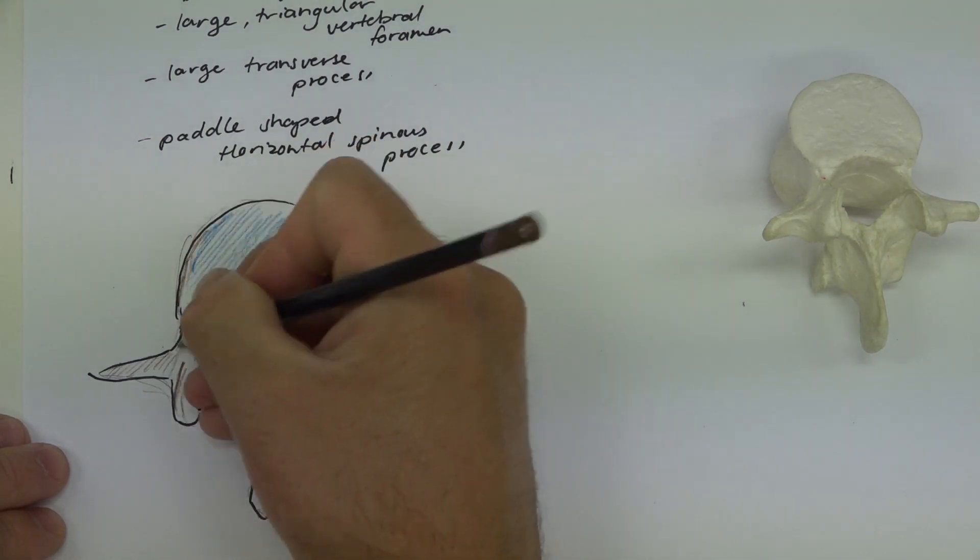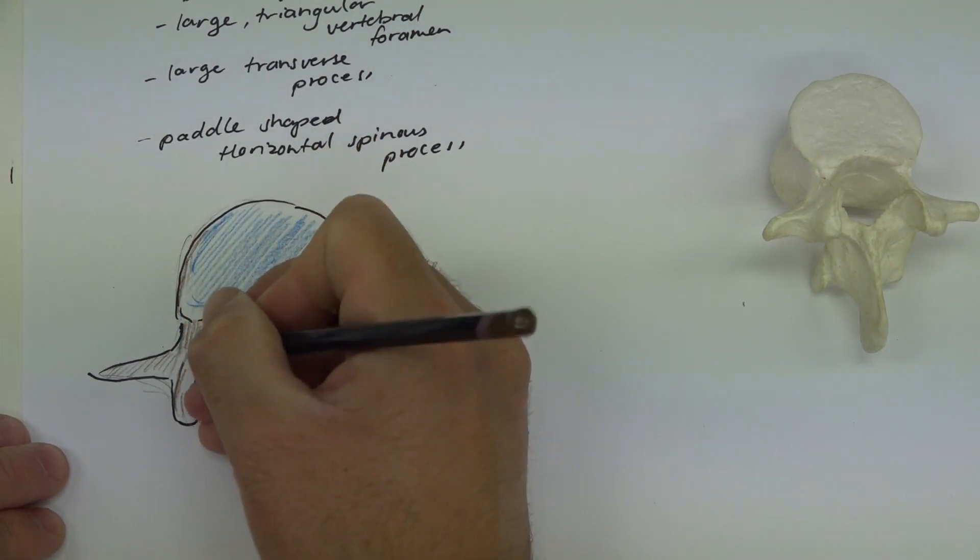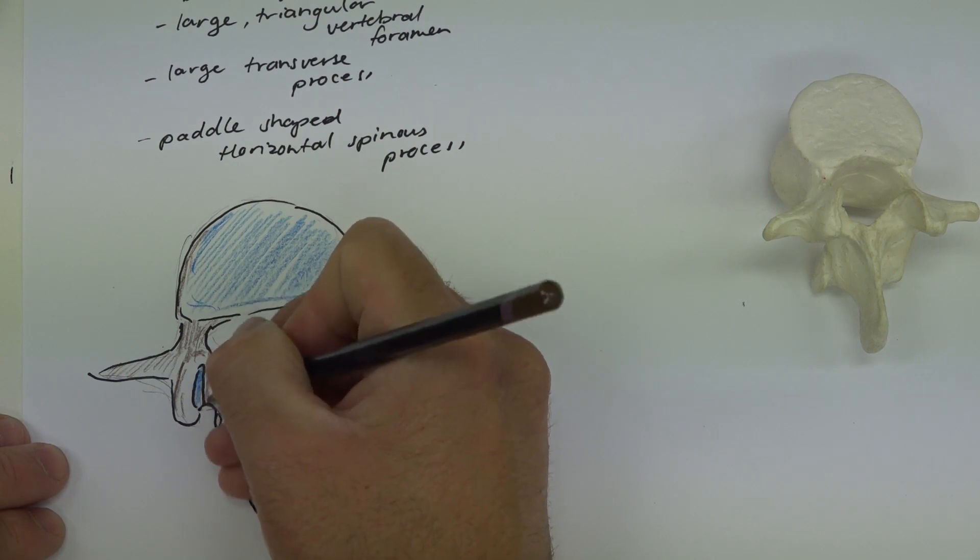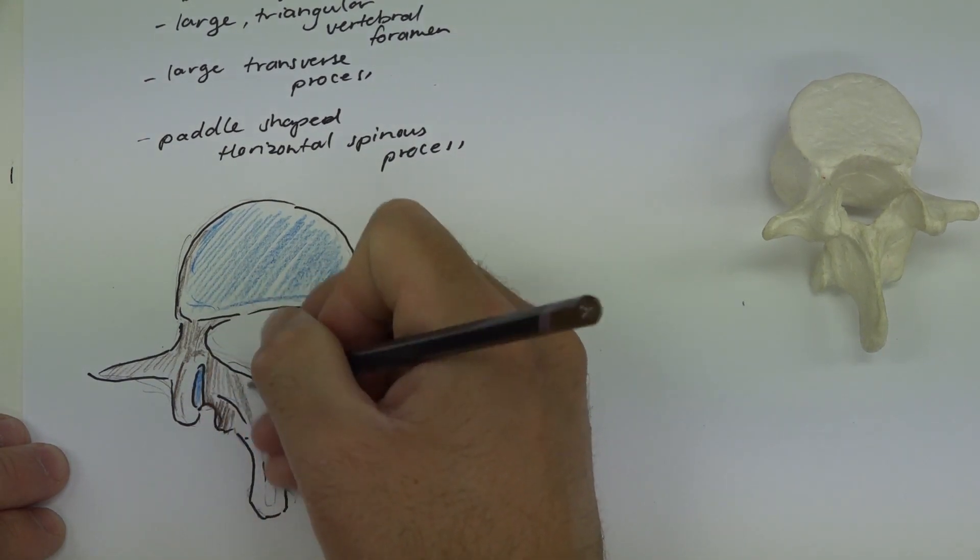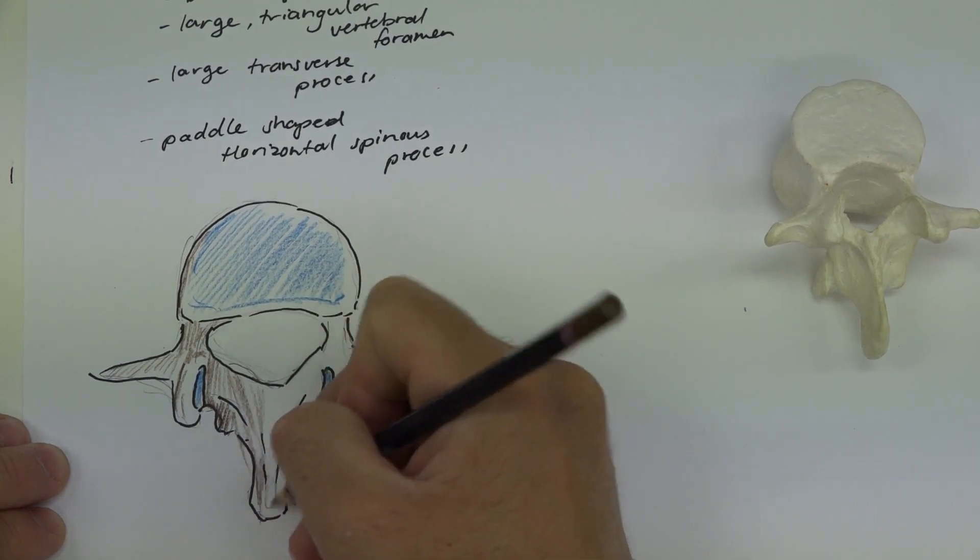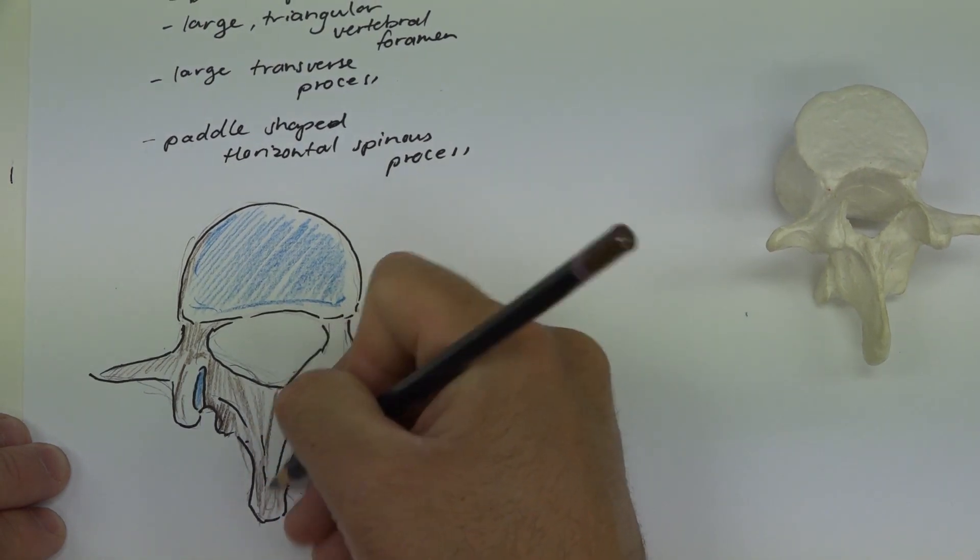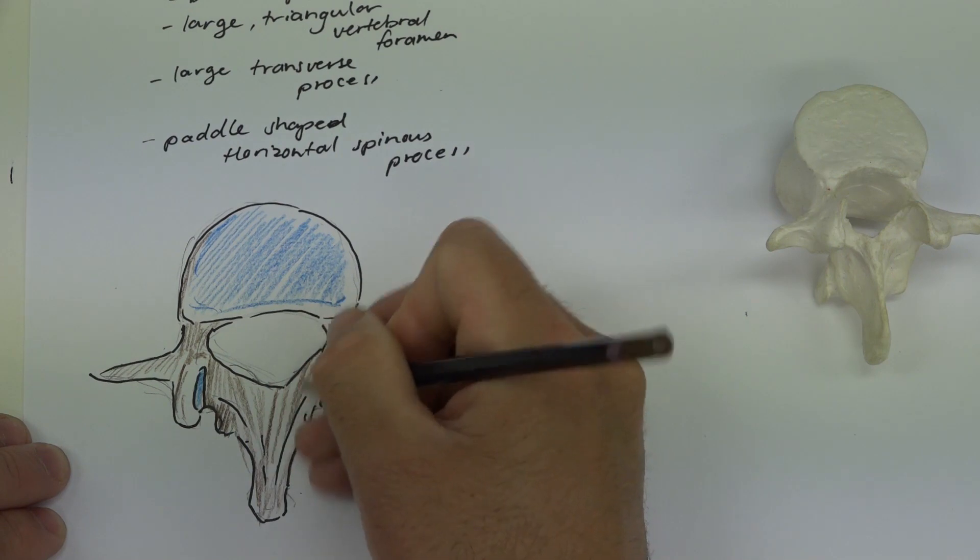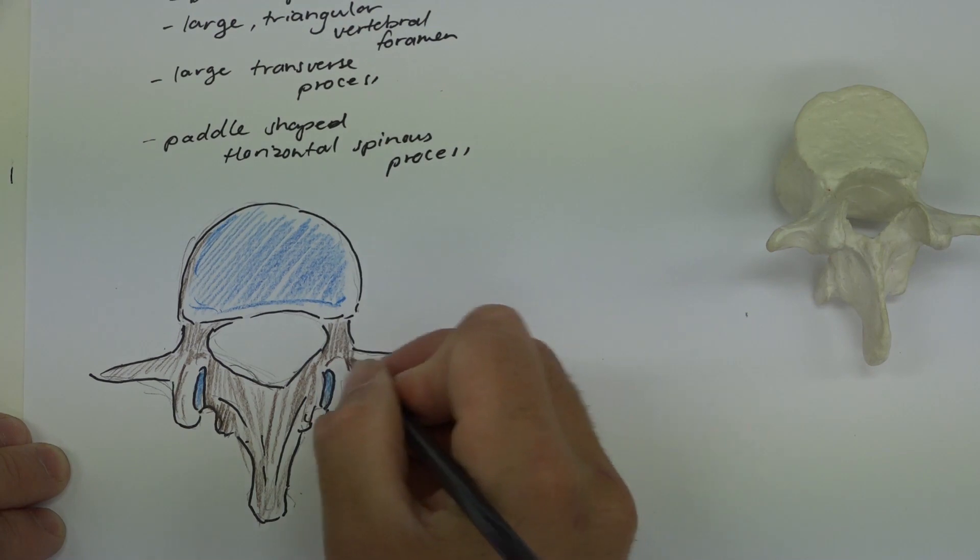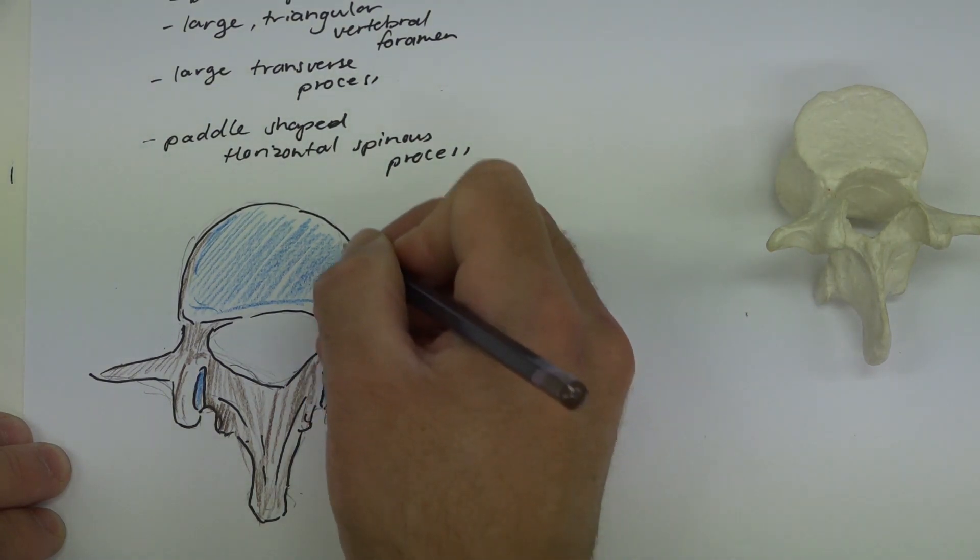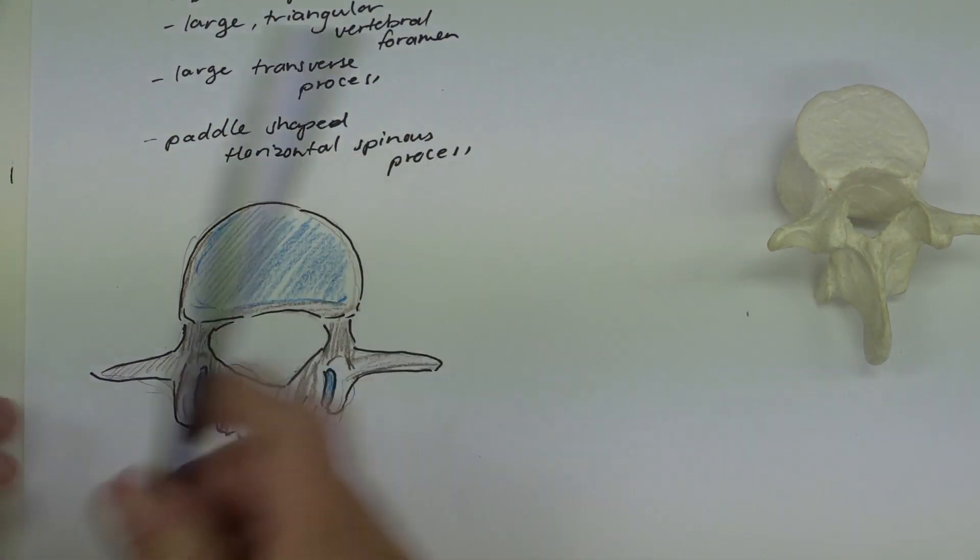So the lumbar vertebrae, we said they are the largest of the vertebrae, and these ones are most responsible for carrying weight or bringing weight and dispersing weight from your lower limbs up to your thoracic region and your body. So they're at the greatest risk because they are taking the most amount of force most often.